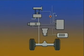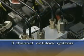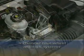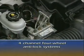While there are many manufacturers of ABS systems, the designs fall into three main design categories. They are one-channel rear-wheel anti-lock systems, also known as RWAL systems, three-channel anti-lock systems, and four-channel four-wheel anti-lock brake systems.